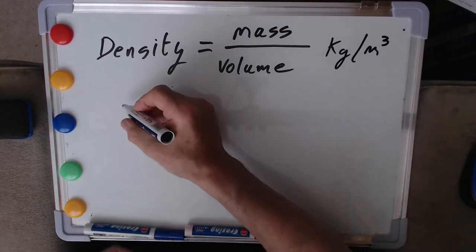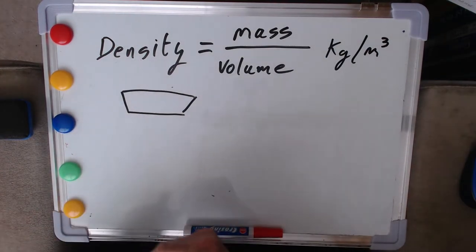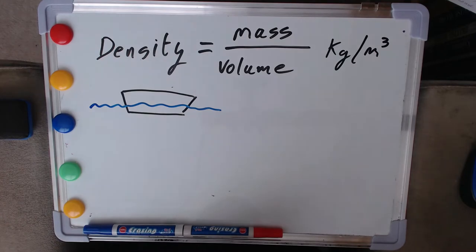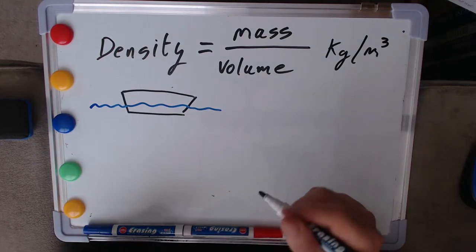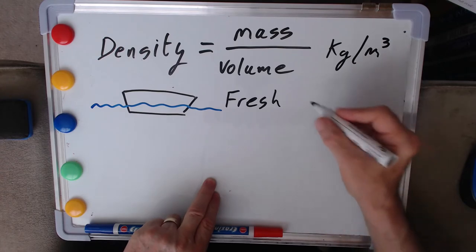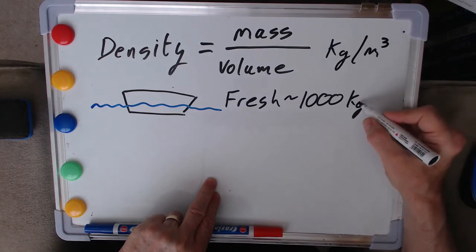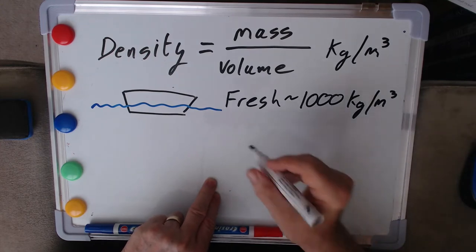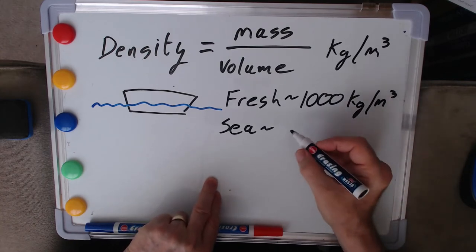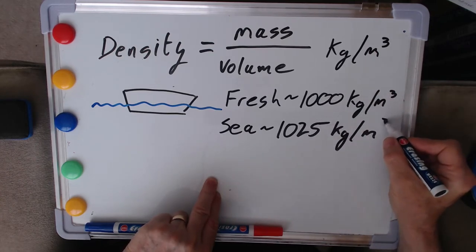A boat for instance is going to float we hope because it has a density that is less than water. And water, well its density varies a little bit, but fresh water for instance has a density that's somewhere approximately in the region of a thousand kilograms per cubic meter. Seawater again it varies depending on the salinity, but a reasonable value is a thousand and twenty-five kilograms per cubic meter.